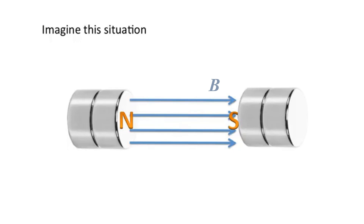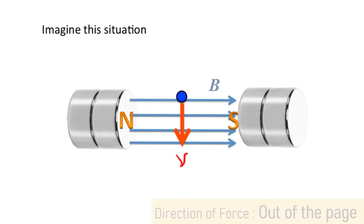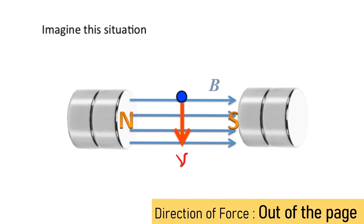Lastly, let's imagine a situation where magnets are facing each other and a positive charge particle is moving downward. By using the right-hand rule, the magnetic force will be out of the page. Please try yourself to get the correct orientation for the right-hand rule.